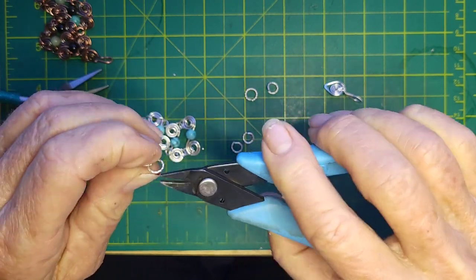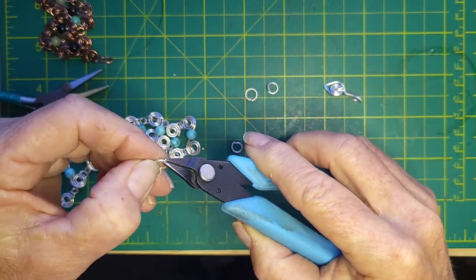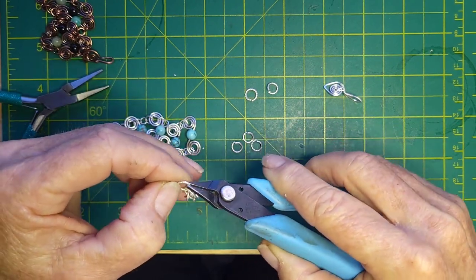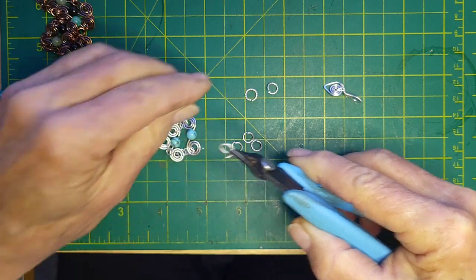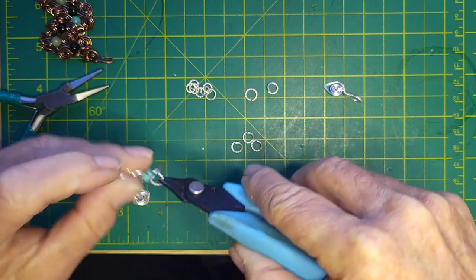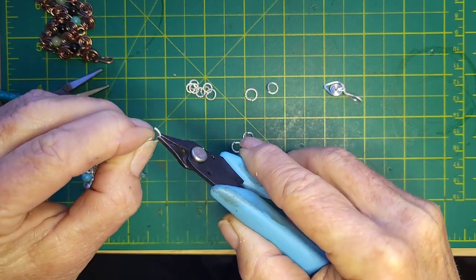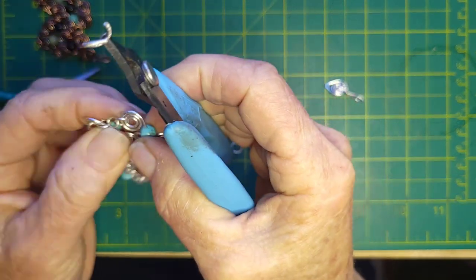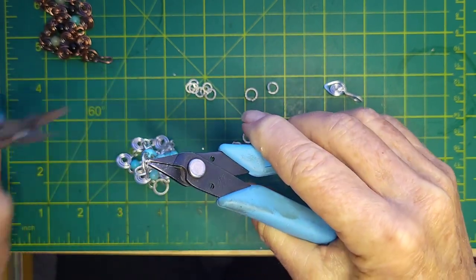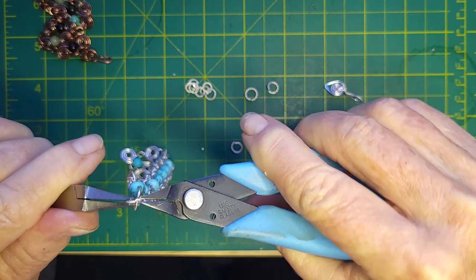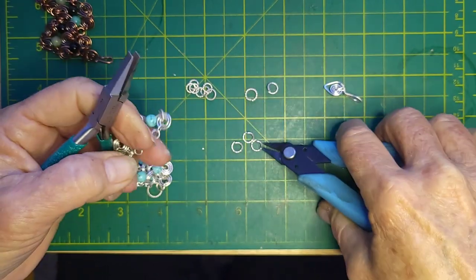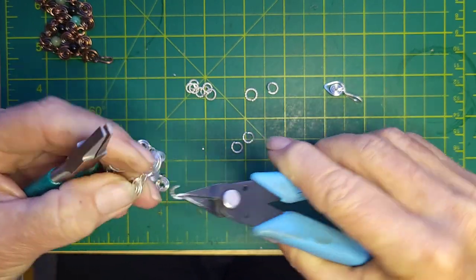So what I'm going to do here is I am going to add double jumps to my last link so that I can do my clasp. So that's all I'm going to do. And I'm going to add two of these to each spiral because I really want it reinforced.